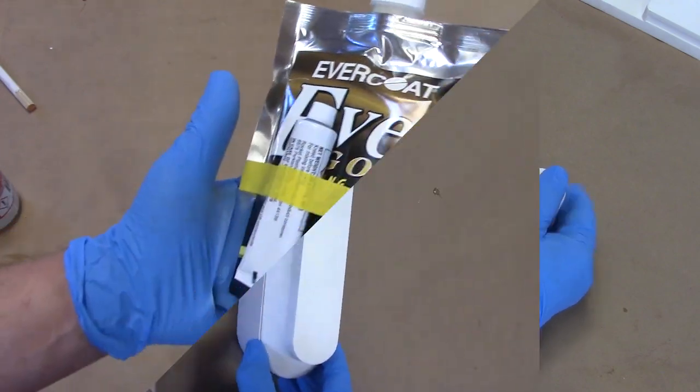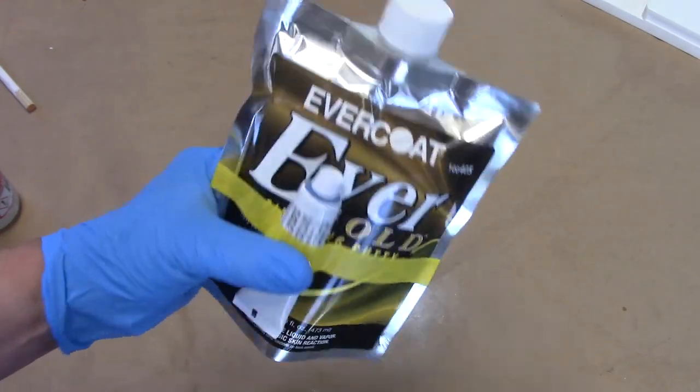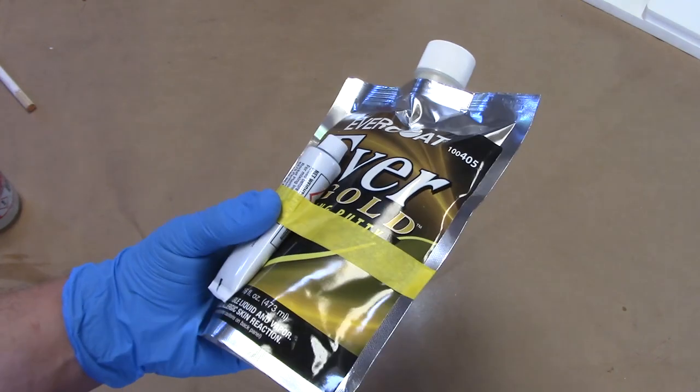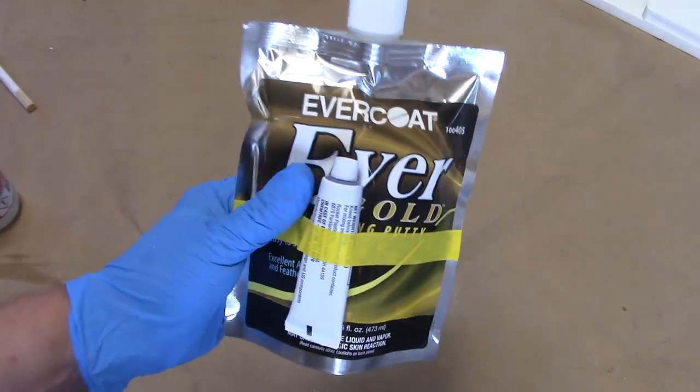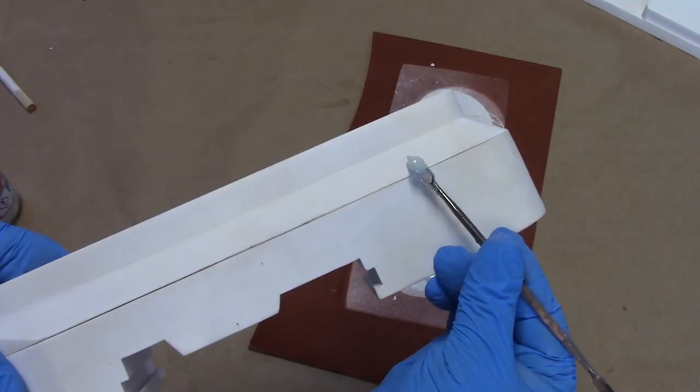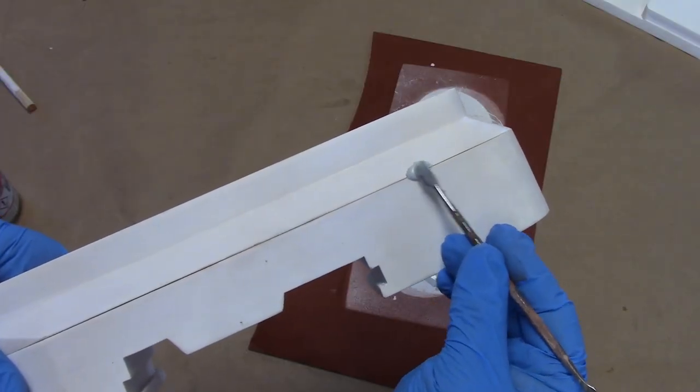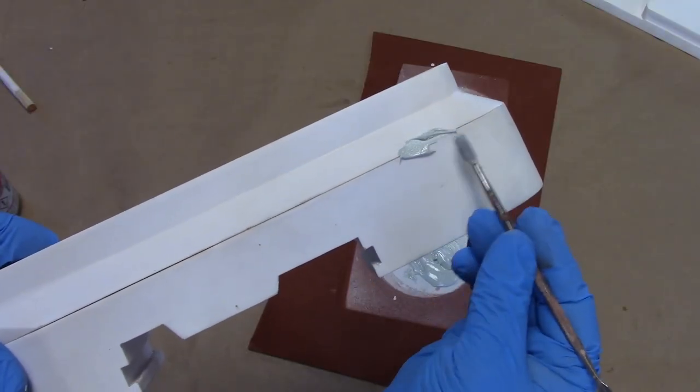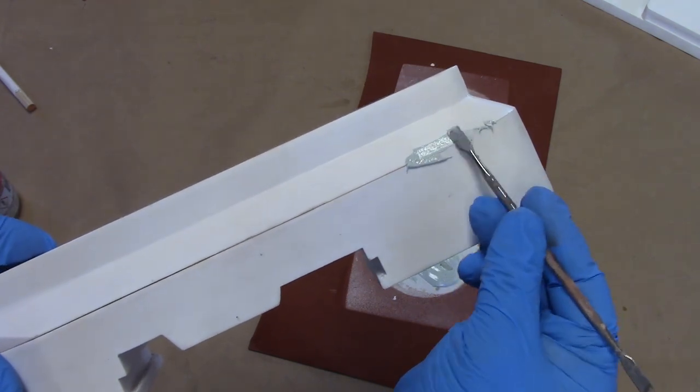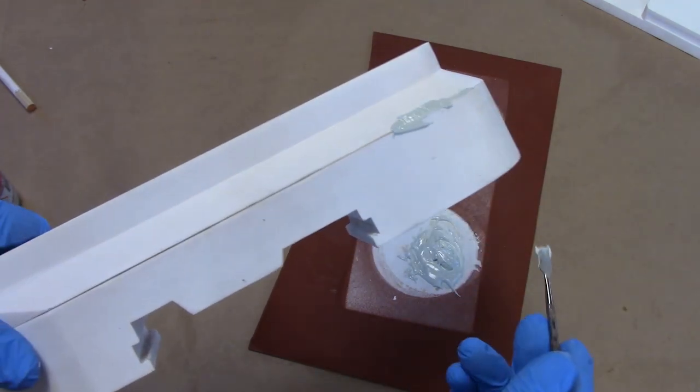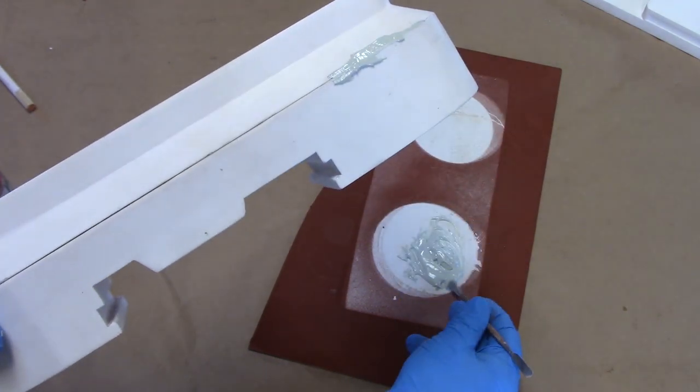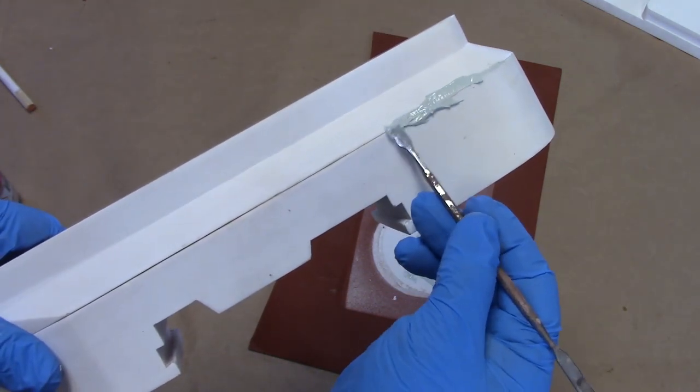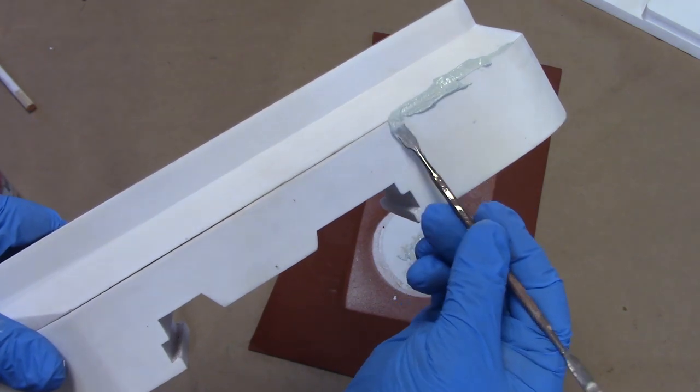This is the filler I like to use, Evercoat Gold. I'll put links, I've got an affiliate program with Amazon, and I'll put links to all the products I'm using in the video description. I'm going to go ahead and trowel on this filler. You might see why I prefer using this over straight Bondo. It goes on much smoother. I mentioned earlier in one of my other tutorials that this stuff goes on like gravy.